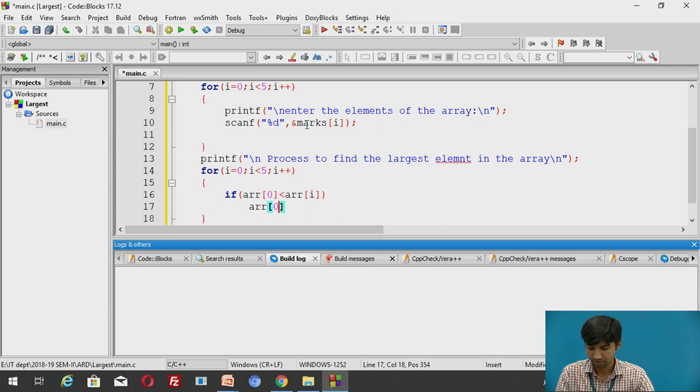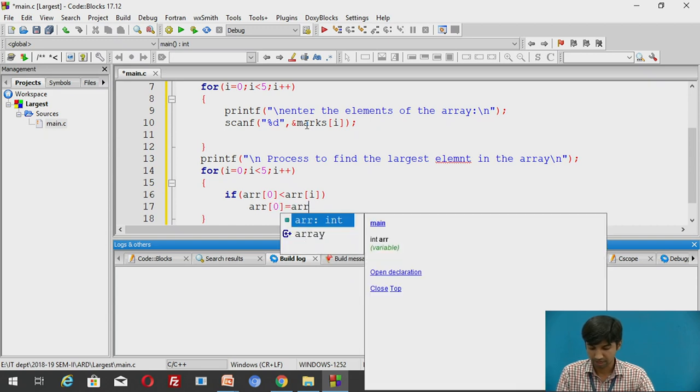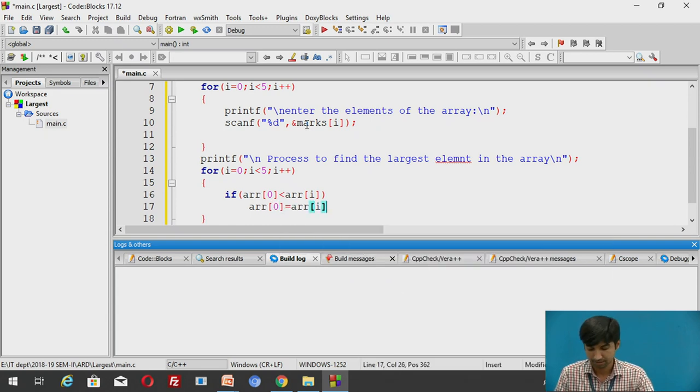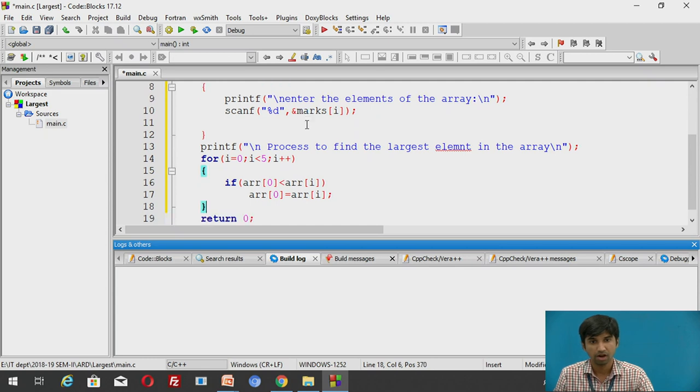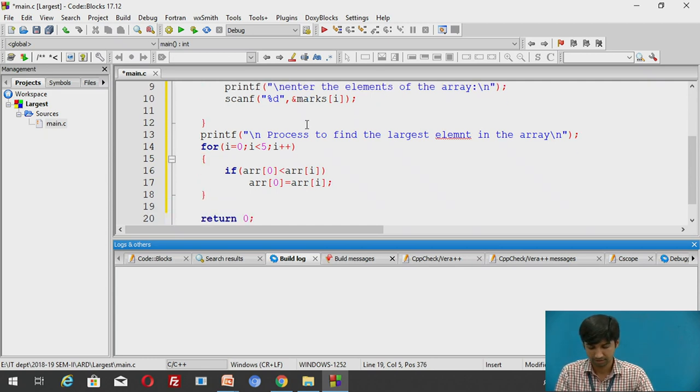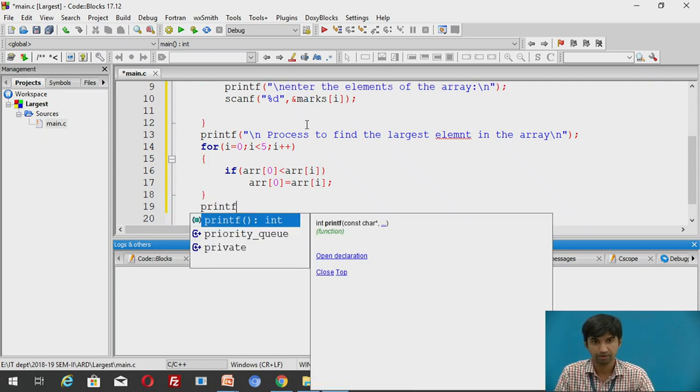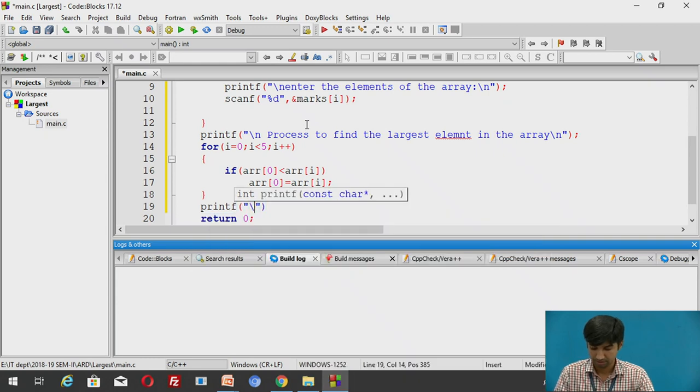Bracket if array of zero is less than array of i then array of zero will be equal to array of i. So after this is done then I say printf slash n largest element equal to percentage d.